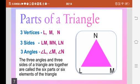Three corners - we don't call them corners, we call them vertices. A triangle has three vertices. Here in triangle LMN, the three vertices are L, M, and N.